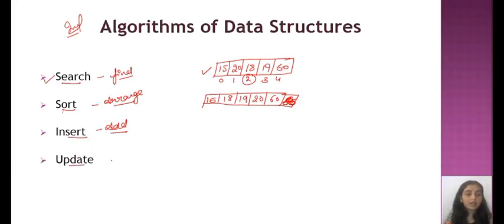Next point is update. Update means to change something. Update can be anything. Like these values we have, if I want to change any value - the value is 15, I want to make it 17, the rest of the values will remain the same. So we call it update. We have updated the value here. Any value we can easily change with the help of update algorithm.